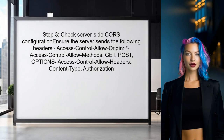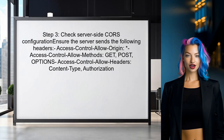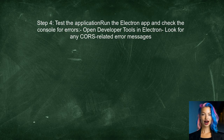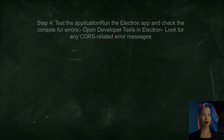Additionally, check the server-side configuration to ensure that it allows requests from the Electron app. This may involve setting appropriate CORS headers on the server. Finally, test the application by running the Electron app and checking the console for any errors. This will help confirm if the CORS issue has been resolved.